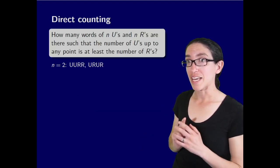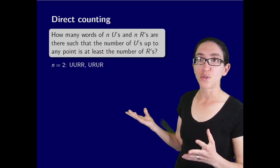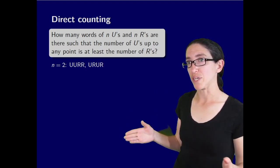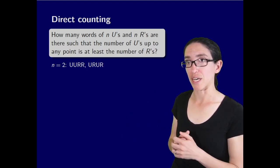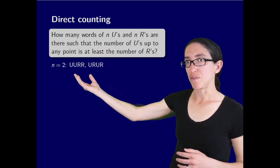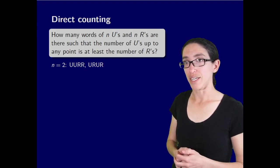Now there is a way of finding a direct counting formula as well. How many words of n U's and n R's are there such that the number of U's up to any point is at least the number of R's. For n equals 2 let's write them out. You can either do UURR or URUR. That corresponds to those two Dyck paths of height 2.